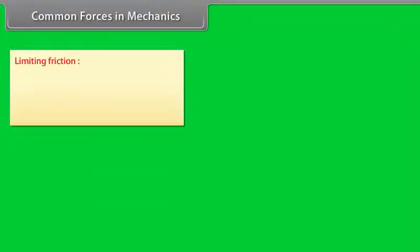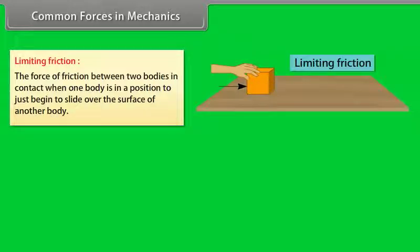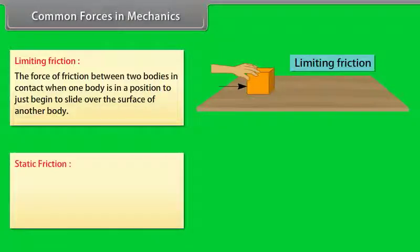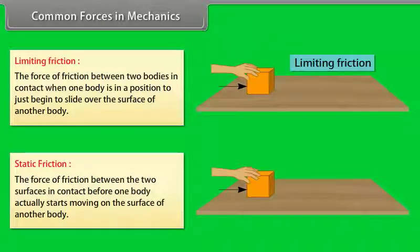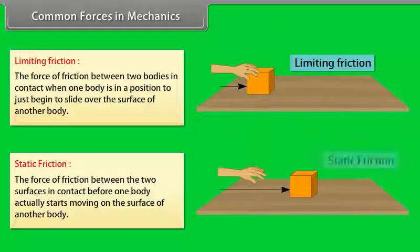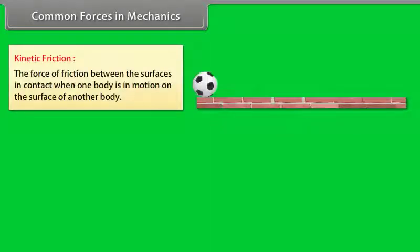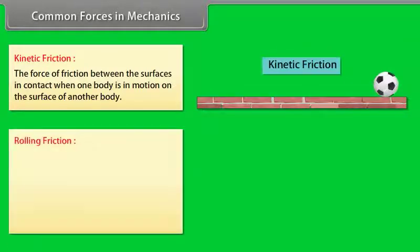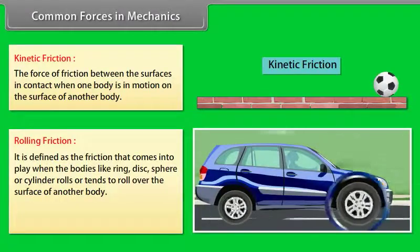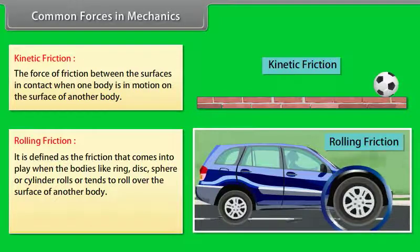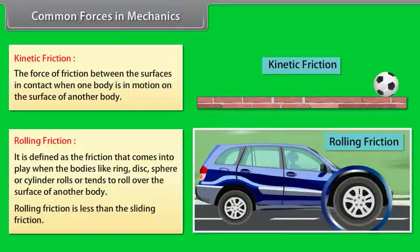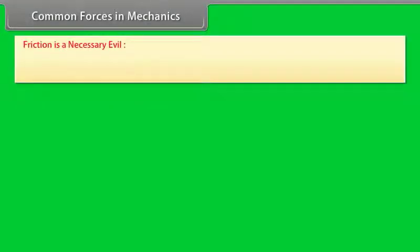Limiting Friction is the force of friction between two bodies in contact when one body is in position to just begin to slide over the surface of another. Static Friction is the force of friction between two surfaces before one body actually starts moving. Kinetic Friction is the force of friction when one body is in motion on the surface of another. Rolling Friction comes into play when bodies like a ring, disc, sphere, or cylinder roll over the surface of another body. Rolling friction is less than sliding friction. Friction is a necessary evil.